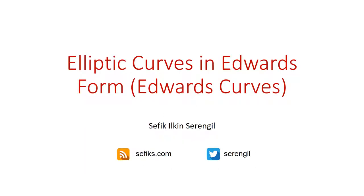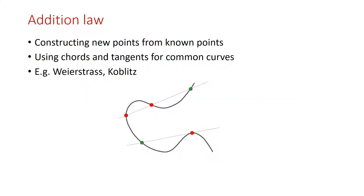We are going to discuss elliptic curves in Edwards form, or shortly Edwards curves. Addition law on elliptic curves is mainly based on constructing new points from known points. We use chords and tangents for construction for common curves such as Weierstrass or Koblitz, but this is different in Edwards curves.